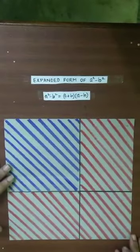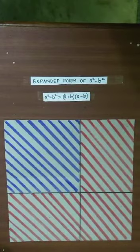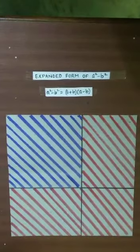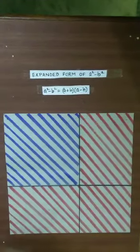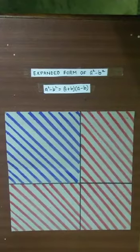Good afternoon students. We know the expanded forms of (a+b)² and (a-b)². Today we are going to derive and see how a²-b² is equal to (a+b)(a-b). We know that the expanded form of a²-b² is (a+b)(a-b), but how we get to that is going to be today's problem.